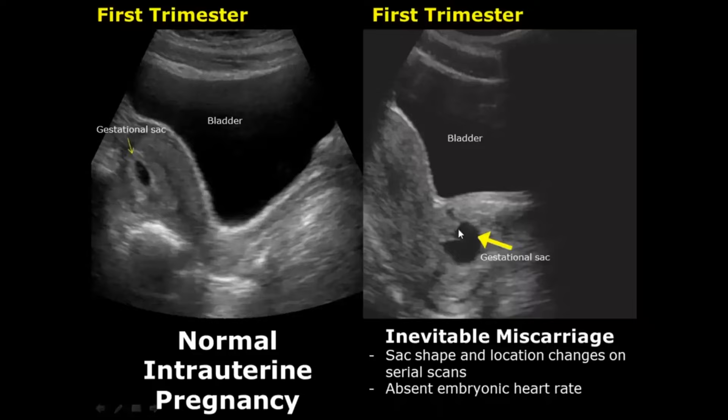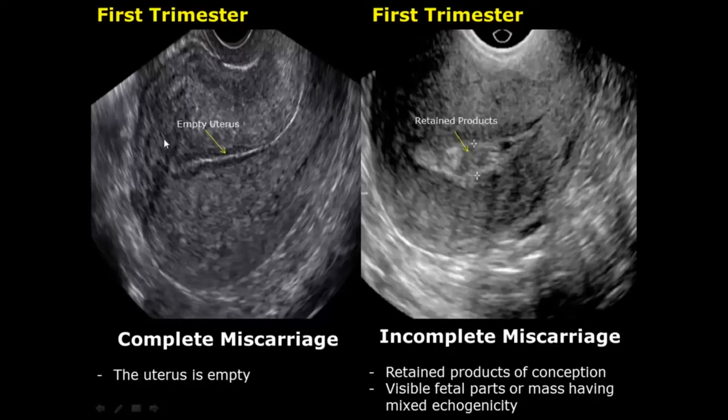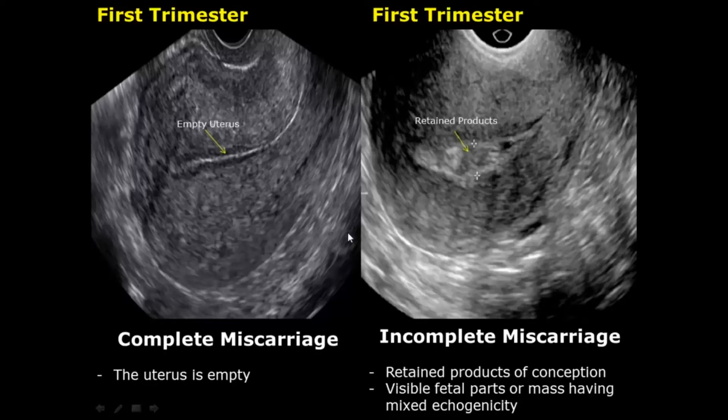The embryonic heart rate may also be absent in an inevitable miscarriage. A complete miscarriage occurs when all fetal parts and pregnancy tissue have been expelled completely from the uterus and the uterus is empty. In an incomplete miscarriage, there will be retained products of conception left behind in the uterus — fetal parts or some remaining placental tissue of mixed echogenicity.